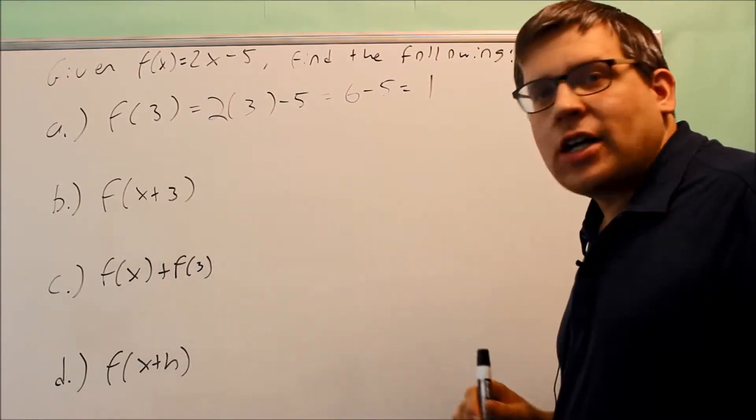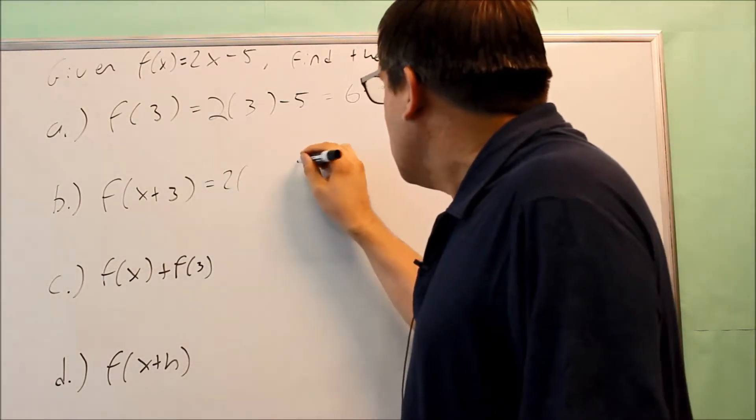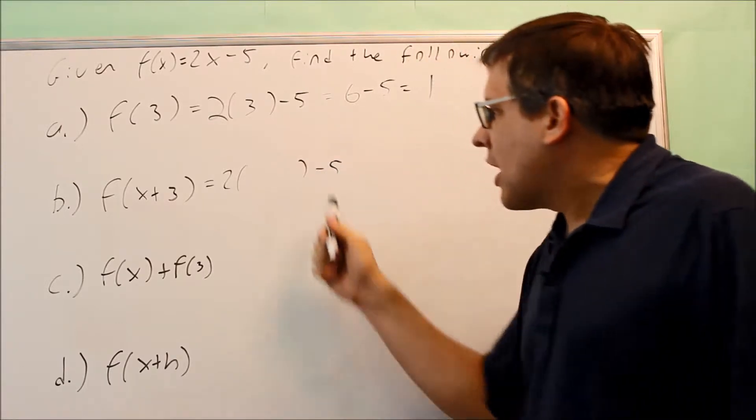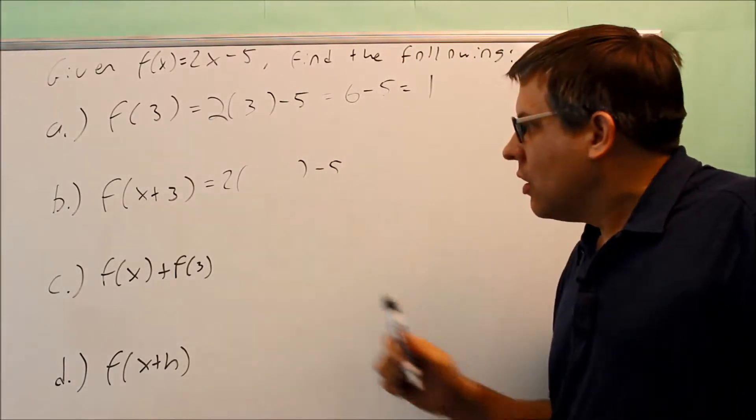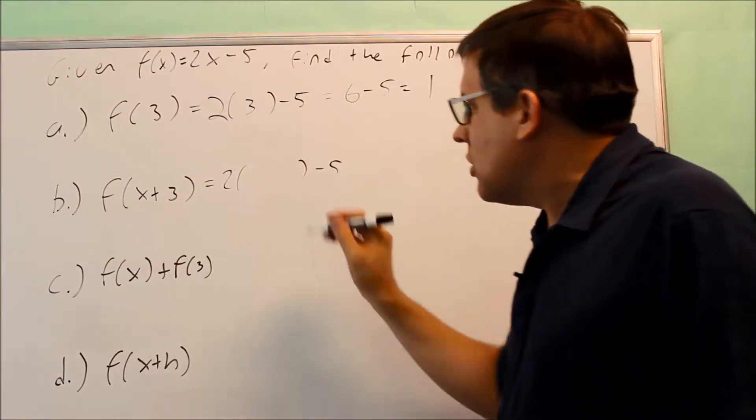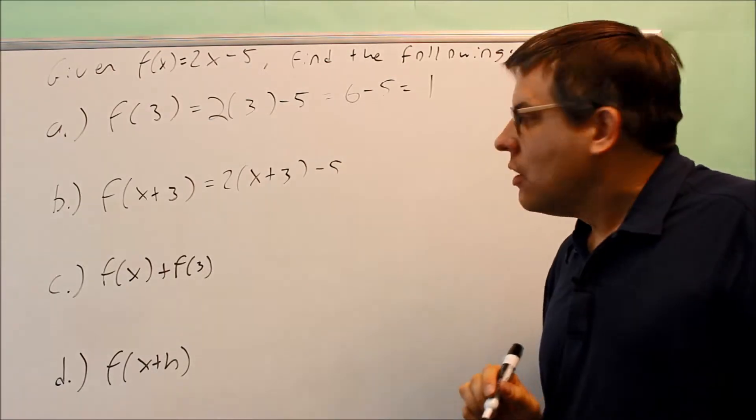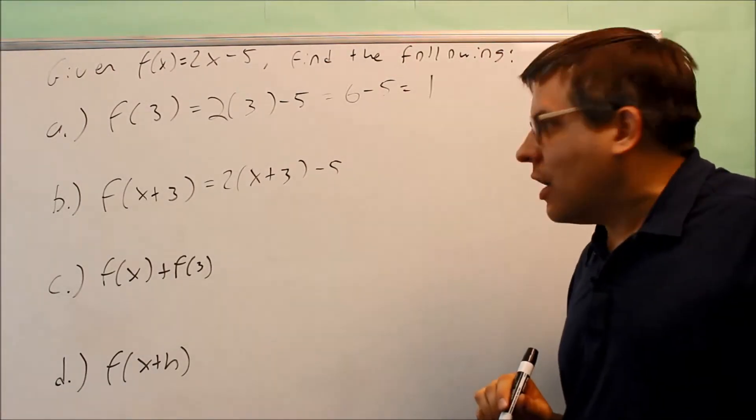Next, we want to find f(x+3). We're going to do the same thing. This time we have 2. We're going to remove the x, and now we have a space that's there. Whatever is in this parenthesis is going to go inside this parenthesis. So I have x + 3 is going to go inside there.